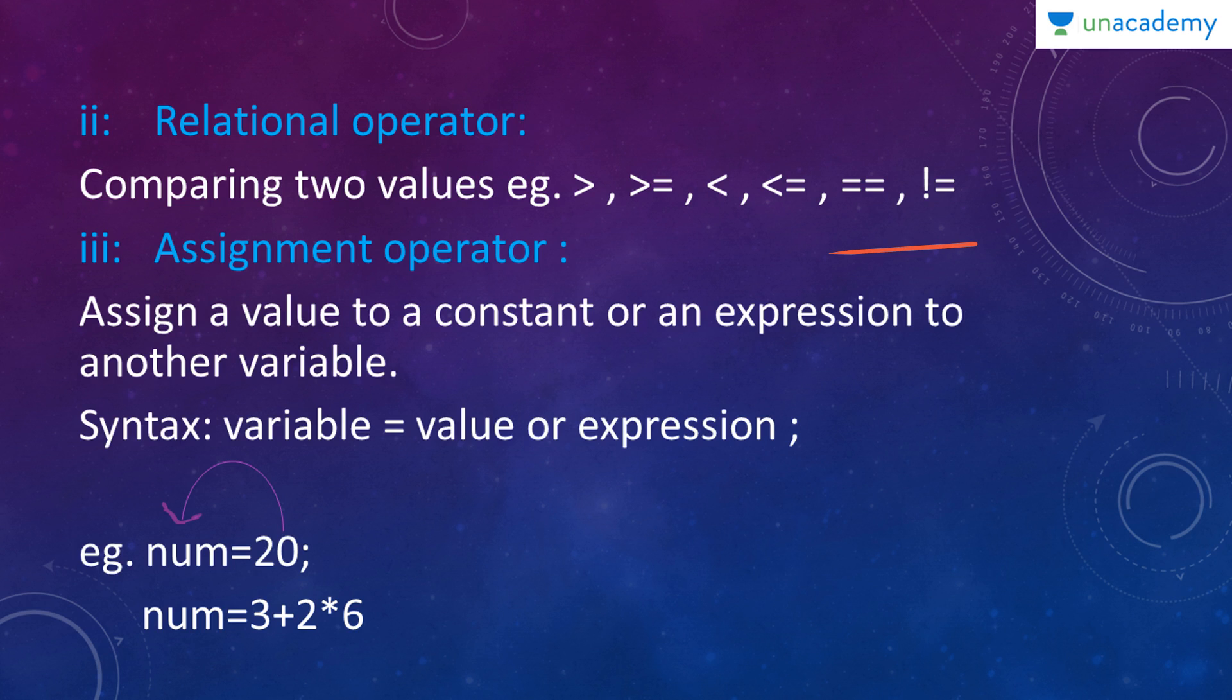Next, we have assignment operator. Assignment operator is assigning a value to a constant or an expression to another variable. The syntax is variable equals to value or an expression. Either you can assign a value to a variable or an expression. In this example, here we have num equals to 20 where num was given the value 20. And here you have num equals to 3 plus 2 into 6. Here it follows the BODMAS rule. That is, first you'll perform 2 into 6 which is 12. Then you add 3 to it. That becomes 15. And always, which has to be noted is, the one on the right side is put to the left.